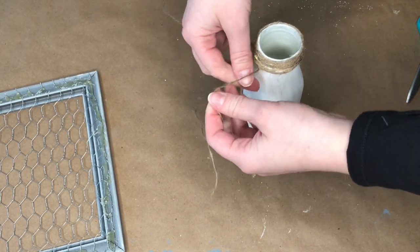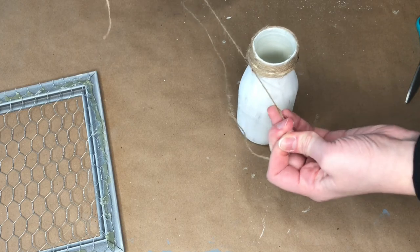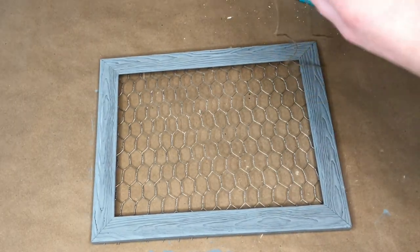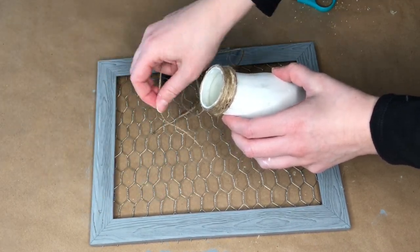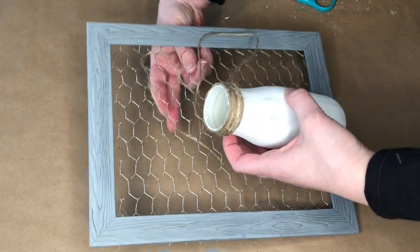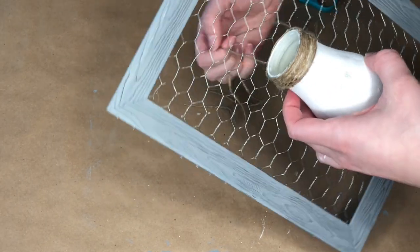After I've placed the knot behind the neck of the glass bottle, I went ahead and placed it on top of the chicken wire frame and figured out exactly where I wanted it placed. Then I put the little jute strands through the chicken wire so that I knew exactly where I wanted to tie it.